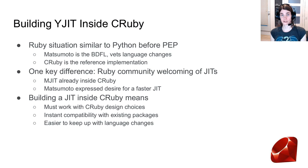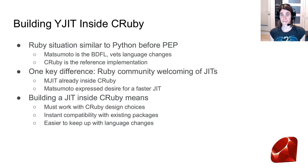Ruby's situation is similar to Python's before PEP vetting — Matsumoto is the BDFL and personally vets many changes, with CRuby as the reference implementation. One key difference is that Ruby core developers have been welcoming of JIT compilers, with MJIT already integrated and Matsumoto expressing desire for a faster JIT in his latest keynote. So we decided to build YJIT inside of CRuby for better compatibility — we get instant compatibility with all Ruby packages and it's easier to keep up with language changes.